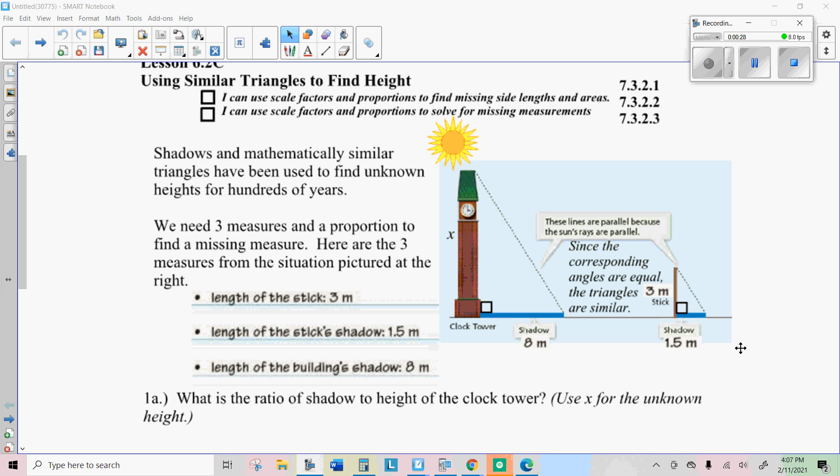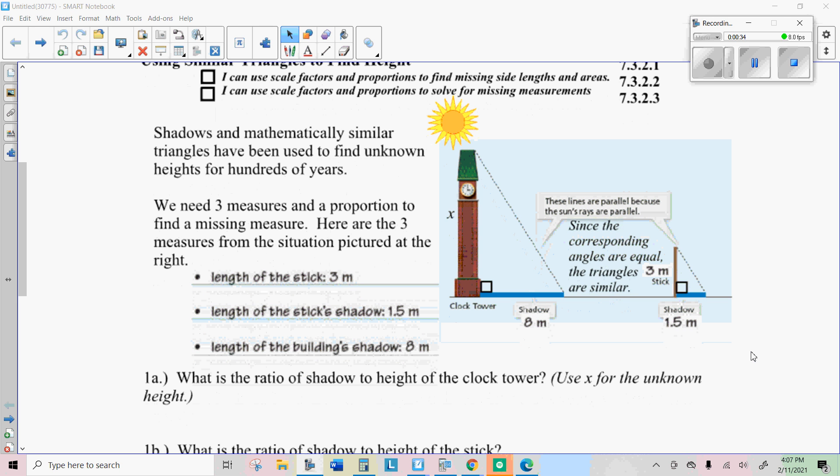And that's because the angle of the sun is the same on all objects out there for this first problem. So the length of the stick here is three meters and its shadow is one and a half meters. That means its shadow is half the length of the stick.